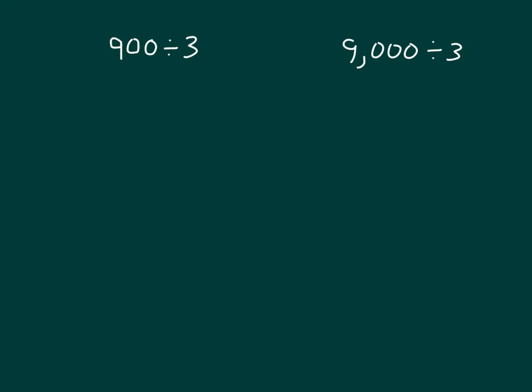Here we have two more expressions. We have 900 divided by 3, and then we also have 9,000 divided by 3. So now we're working in the hundreds and also in the thousands. Let's see what happens. Let's model with disks first. We'll set up some place value charts.